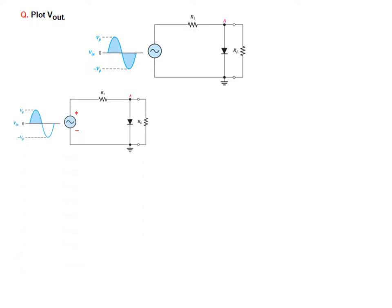Let us take the first half cycle or the positive cycle. So when positive is applied, positive at the top and negative at the bottom, this positive is touching the positive terminal of the diode. That means the diode will become forward bias.